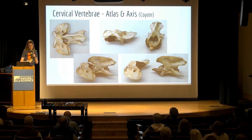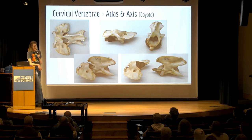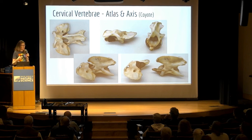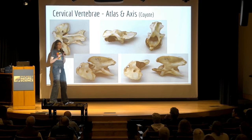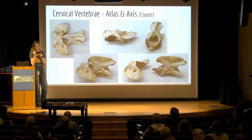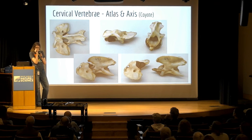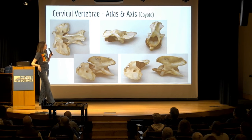Honing in on the first two cervical vertebrae — the atlas and the axis — because they're the coolest. The atlas is by far one of my favorite bones anywhere in any species because it's just so wild. It doesn't have a body, it doesn't have a spine, it's got these wings out to the side. And even the tiniest little dudes — like mice and shrews in the lab — their atlas looks like this. I just love it.